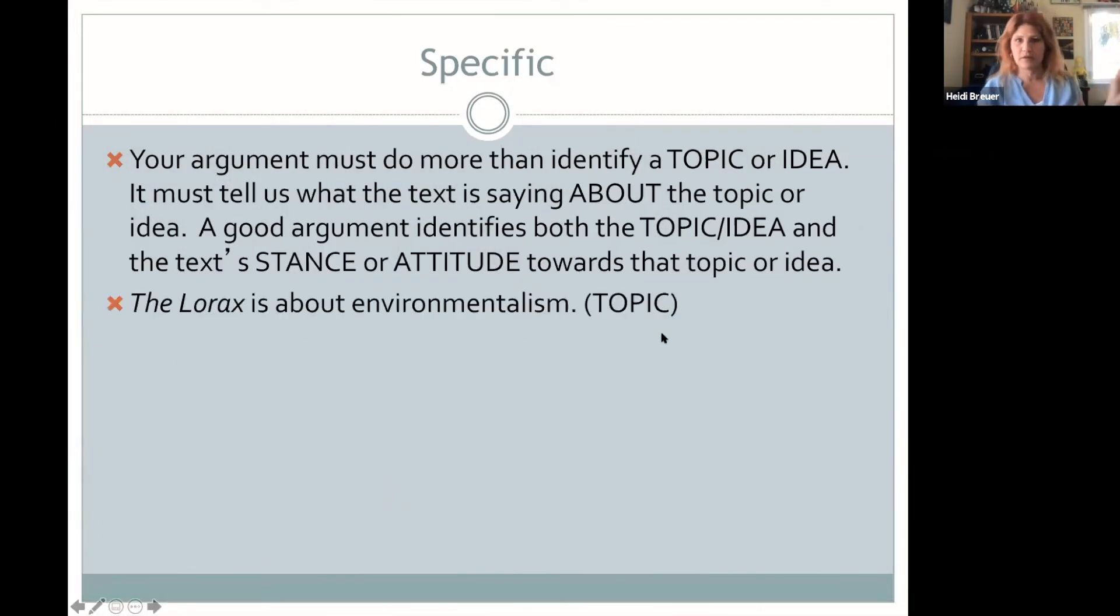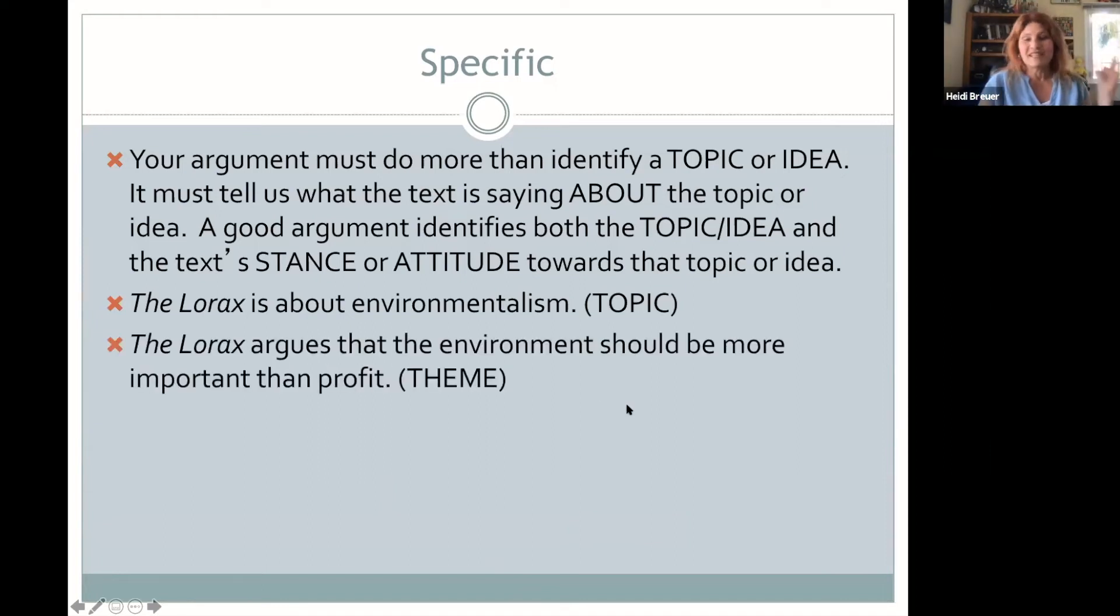Here's some examples. The Lorax is about environmentalism. That's a topic. Environmentalism. You might like it. You might hate it. It's just a topic. That's not specific enough because we're not to the claim yet. Then what about environmentalism? Well, maybe the Lorax argues that the environment should be more important than profit. That's making a claim. That shows me the text's stance towards environmentalism, its attitude towards it. Environmentalism is important. We need to privilege it over other things like profit.